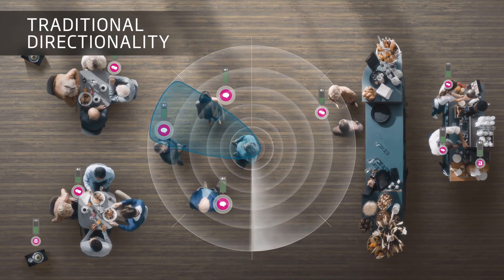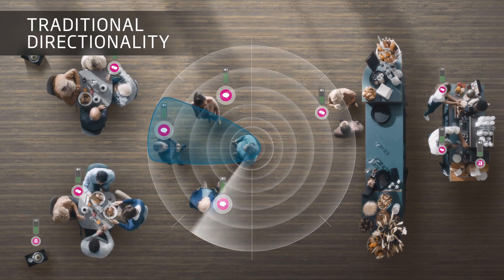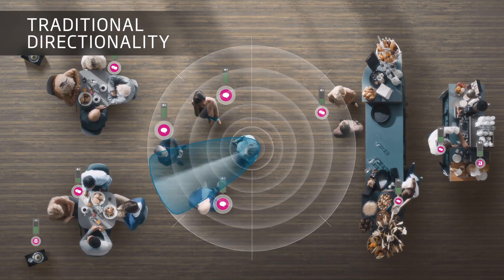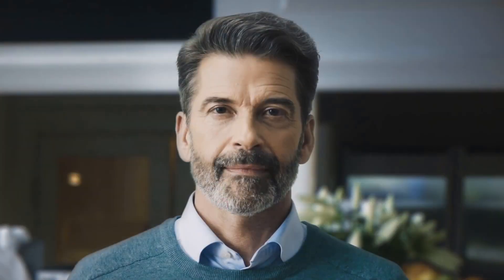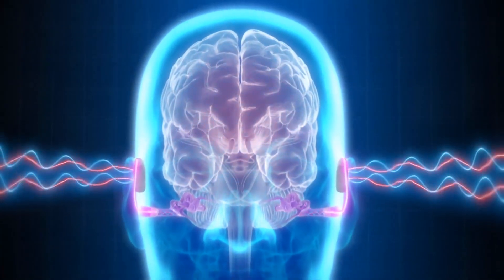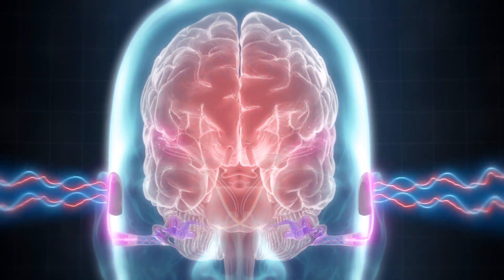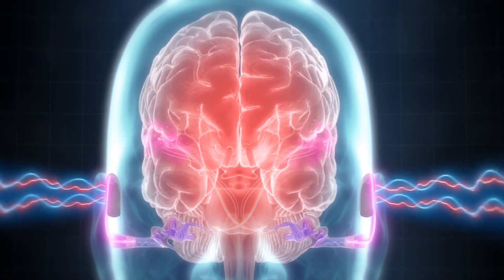Traditional hearing aid technology is too slow and processes directionality independent of noise reduction systems. They limit hearing aid users by only isolating one sound source coming from the front. Without a complete sound picture, the brain has to work harder to make sense of the environment.